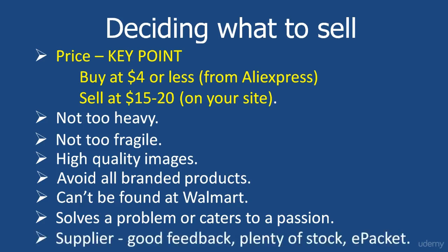The last thing is the quality of the supplier. AliExpress makes this simple — you can see whether they have good feedback from buyers, whether they have plenty of stock, and importantly whether they provide ePacket. ePacket is a shipping solution that expedites the process. A big disadvantage of shipping from Chinese suppliers is that it can take 30 to 40 days, and buyers won't be happy waiting that long. Because you're shipping at a slightly cheaper price point they'll be more tolerant, but ePacket gets items delivered in roughly 5 to 15 days, which buyers are much more willing to accept.